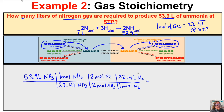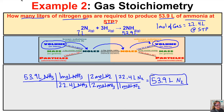We put this in our calculator: 53.9 ÷ 22.4 × 2 ÷ 2 × 22.4, and we end up with 53.9. Liters of NH₃ cancels, moles of NH₃ cancels, moles of N₂ cancels, leaving us with liters of nitrogen gas. So in this reaction, if 53.9 liters of ammonia are produced, it's because we have 53.9 liters of nitrogen reacting.